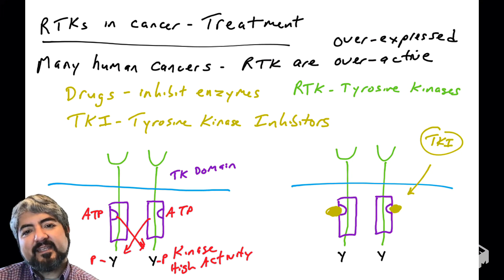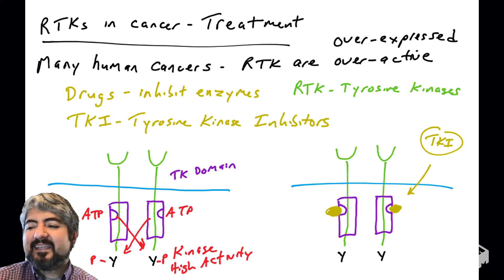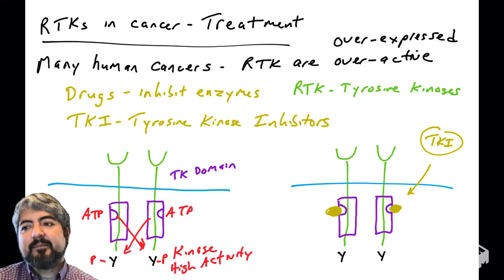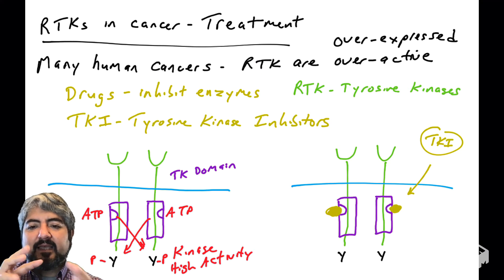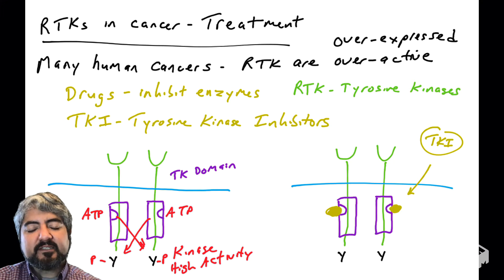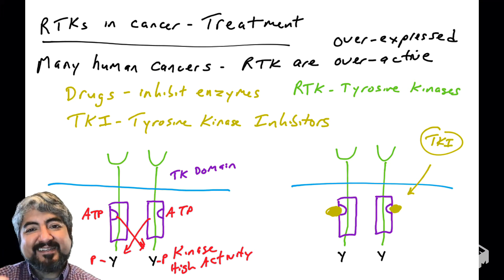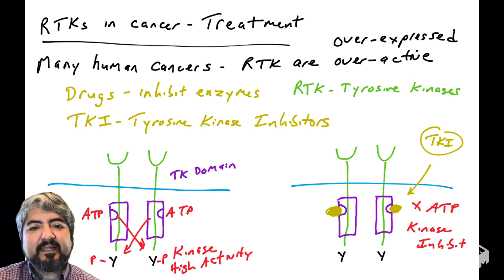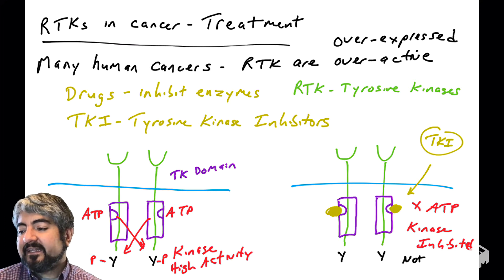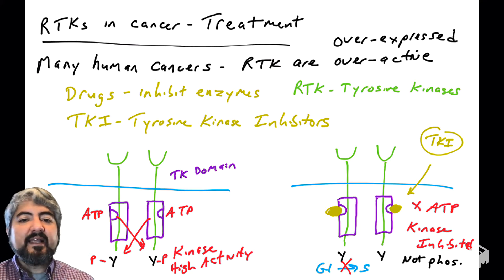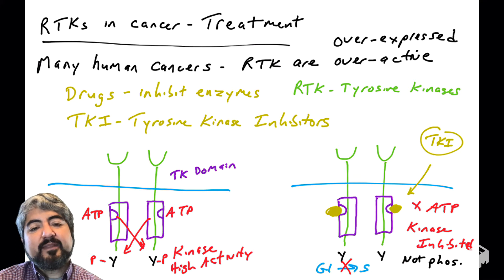Many tyrosine kinase inhibitors bind to the ATP binding pocket of the kinase. Kinases have a pocket that binds ATP and another pocket that binds the substrate; the enzyme removes the terminal phosphate from ATP and transfers it to the substrate. The ATP binding pocket is therefore a great target — compounds that bind there will prevent the kinase from binding ATP, which means it will be unable to phosphorylate its substrate, which is the partner in the dimer pair. With the kinase inhibited, the tyrosines don't get phosphorylated.